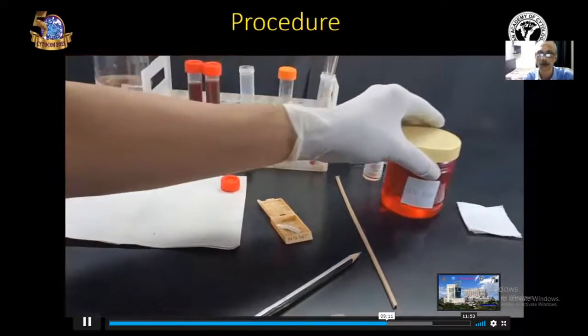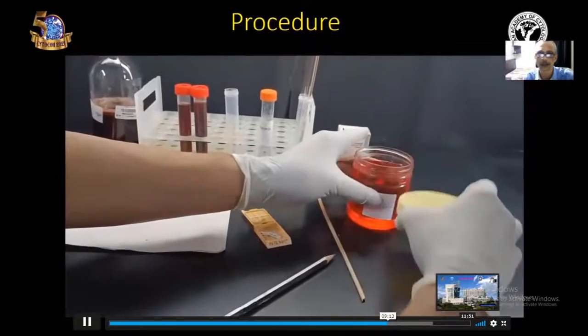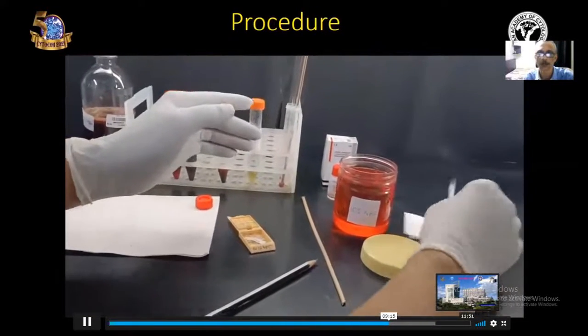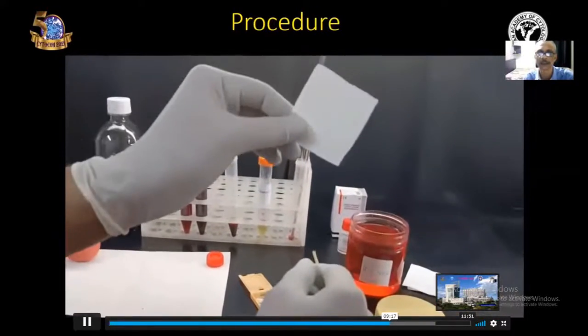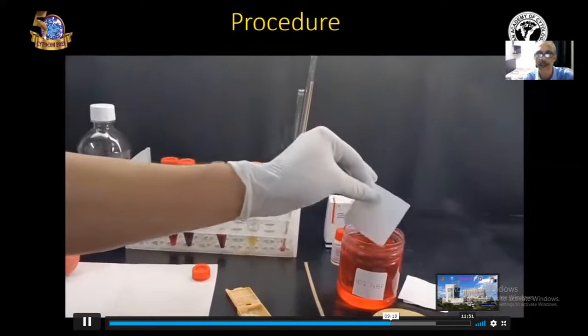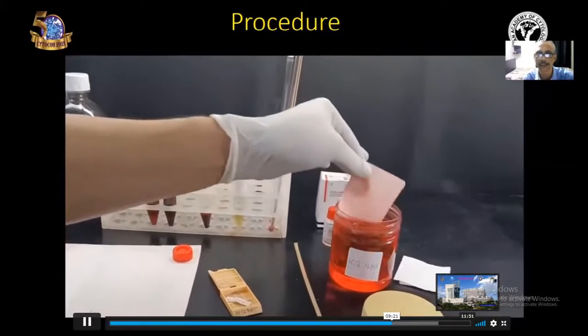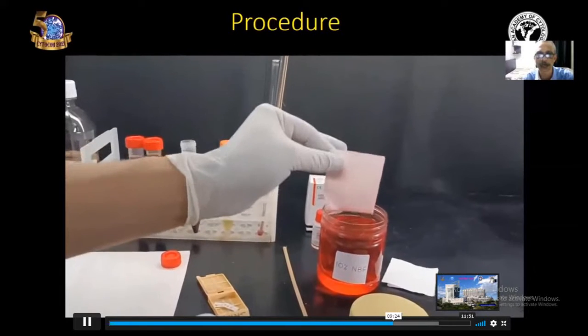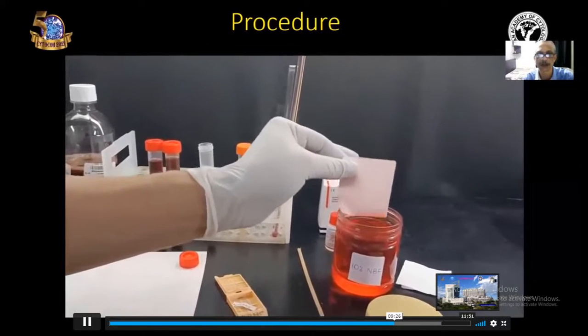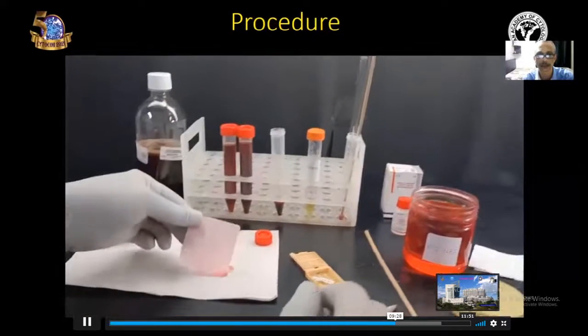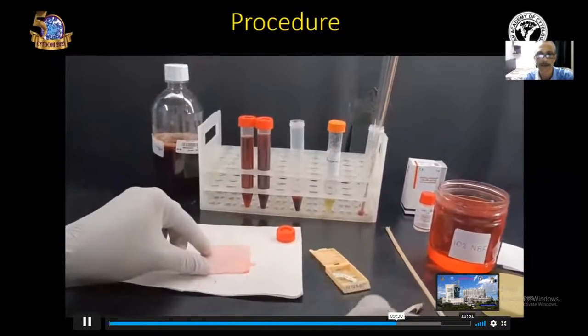Now, next step is open the fixative bottle and take a small Whatman number one filter paper which is cut in a small rectangular shape and dip it in the fixative. Now, the filter paper is flexible and we can keep the filter paper on a flat surface.